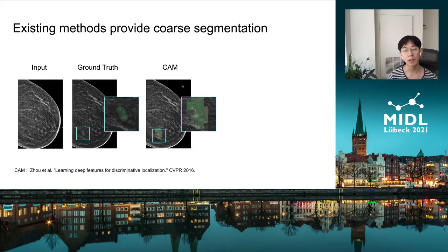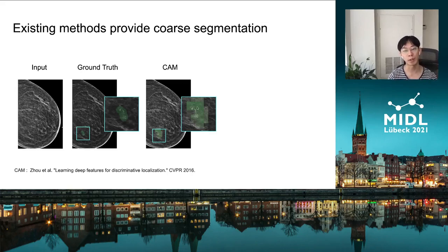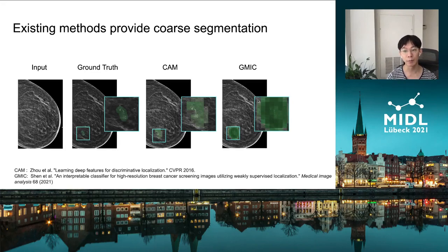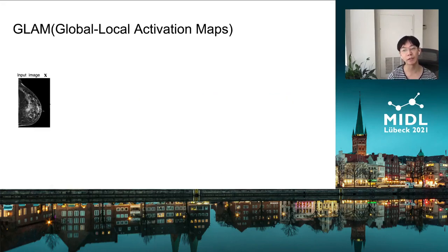For example, this is the output by CAM, which is a very popular method for weakly-supervised localization for natural images. As we can see, it's kind of coarse. We also have a GMIC result, which is a specialized classifier for high-resolution breast cancer screening. The resulting saliency map is also not satisfactory enough. In our method, we try to get a high-resolution saliency map to precisely localize the lesions.